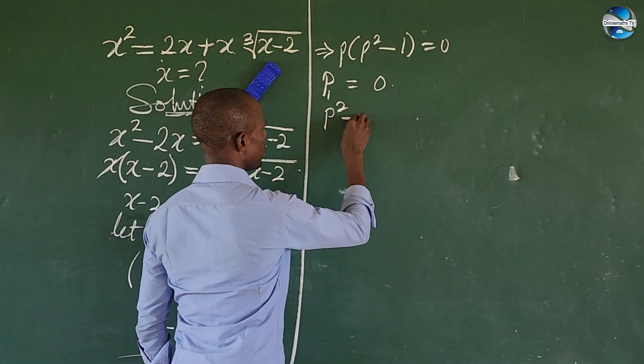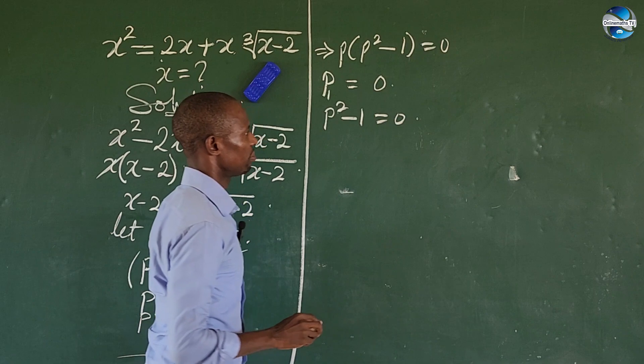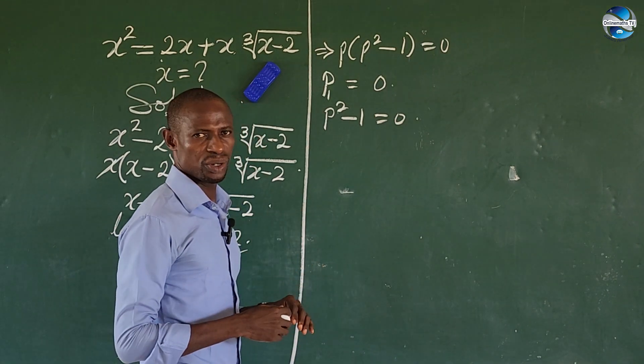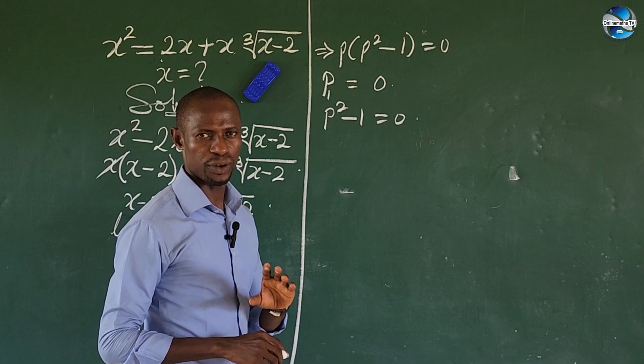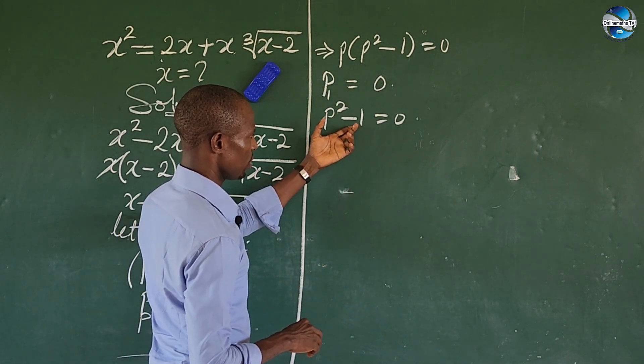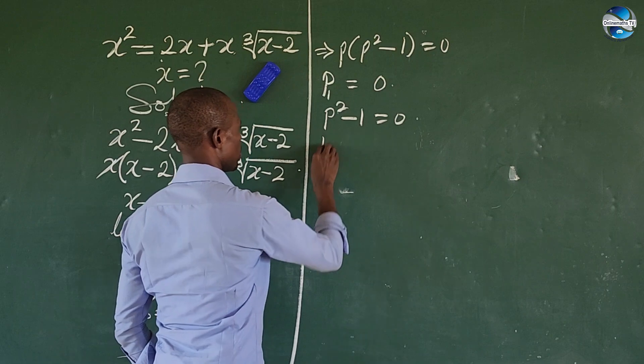Now this is a quadratic equation whereby we are expected to solve for two solutions. So long as this is unity, move this to this side of the equation, so we have p² equals 1.